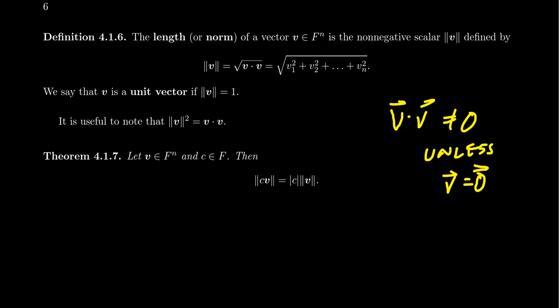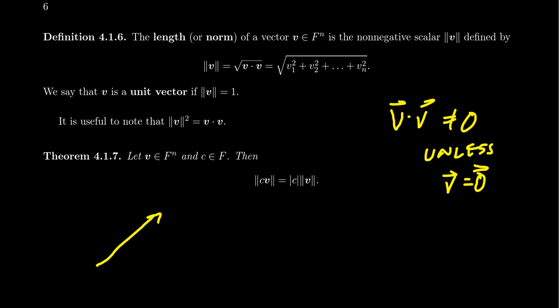With an inner product, we can define something called the length of the vector, or more commonly in linear algebra, it's called the norm of the vector. It's denoted by writing the vector with a double absolute value symbol. Some people use single absolute value symbols — that's perfectly fine. We're going to use double absolute values to describe the norm, the length of the vector. And it really is meant to describe how long a vector is. We first thought of vectors as arrows in space, and the length of that arrow is what the norm describes.